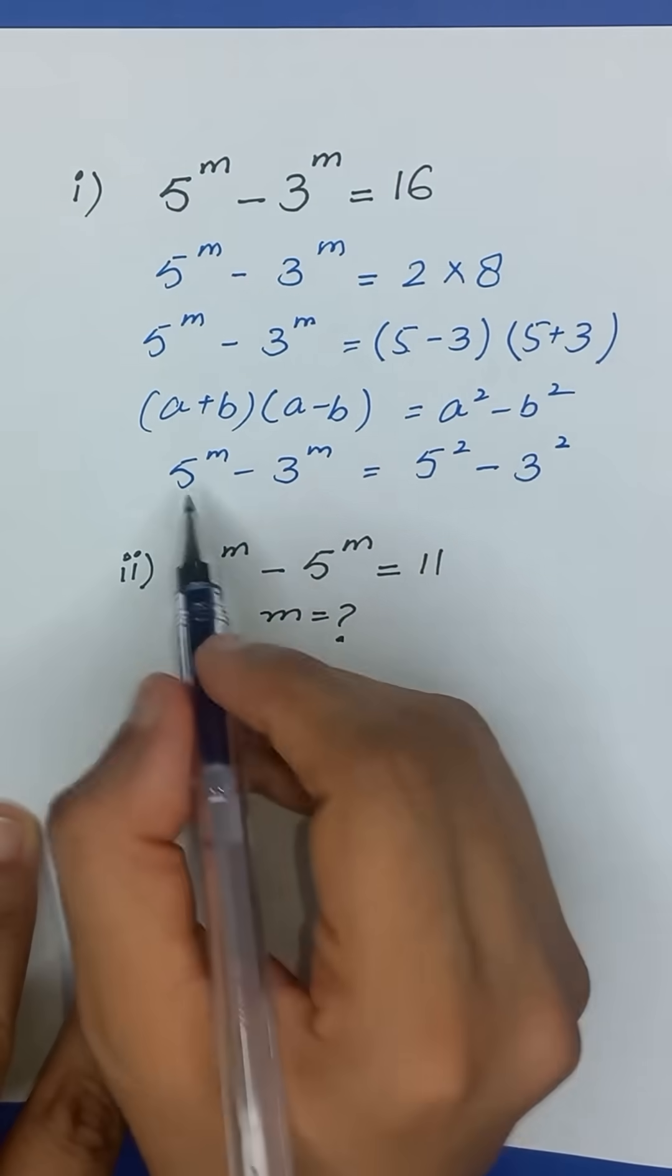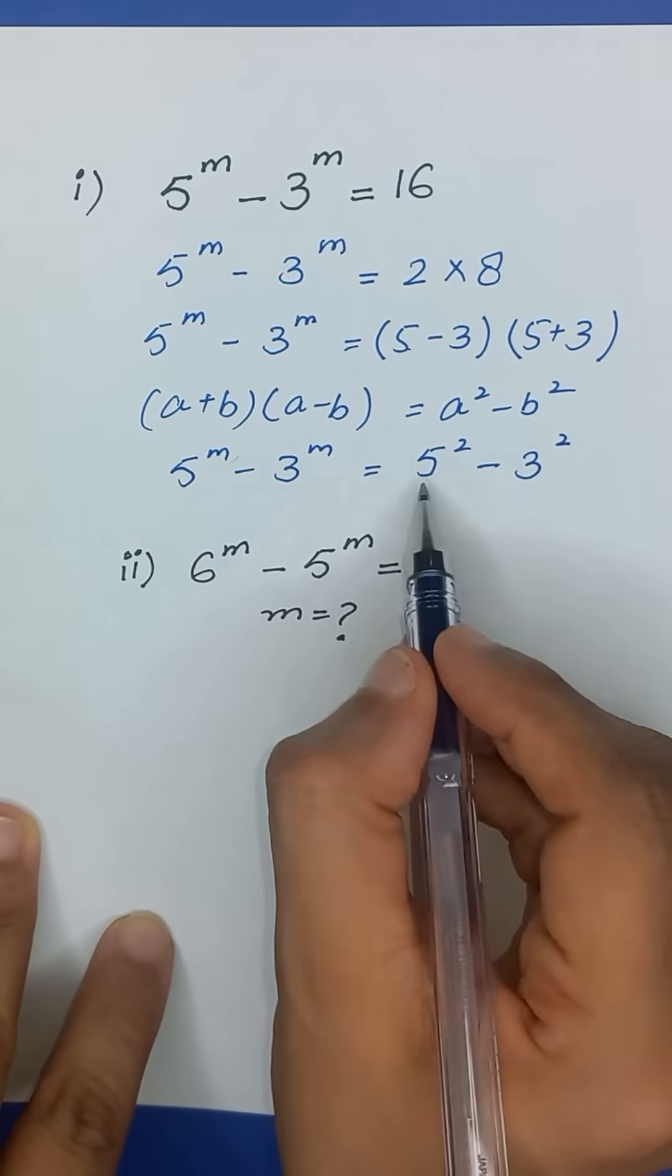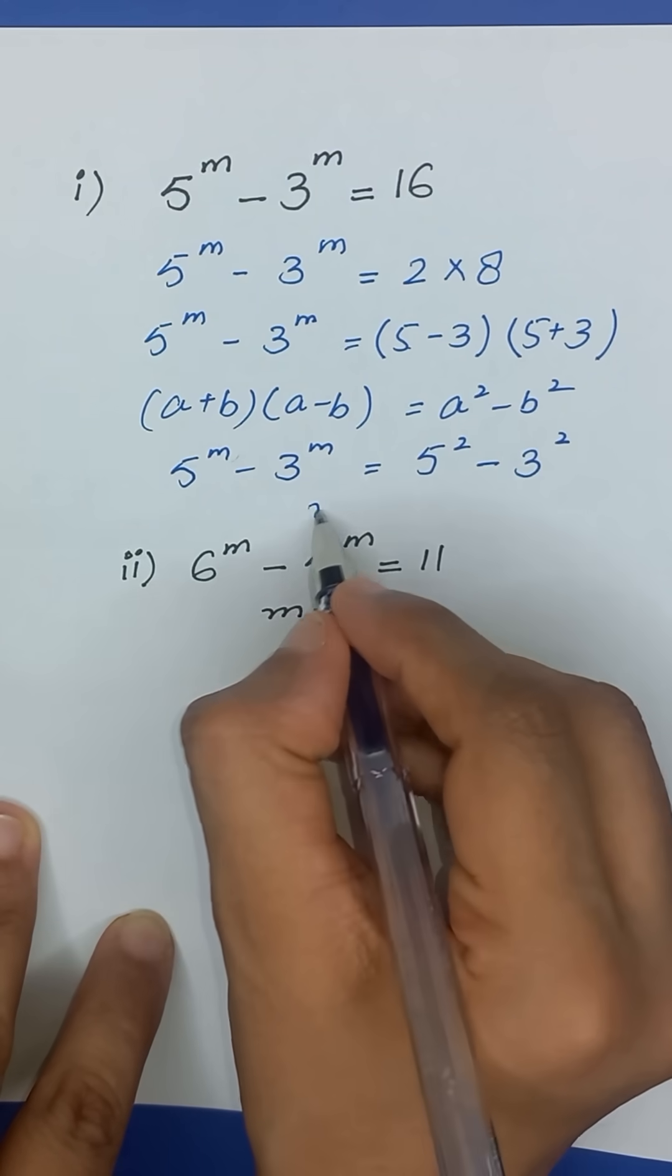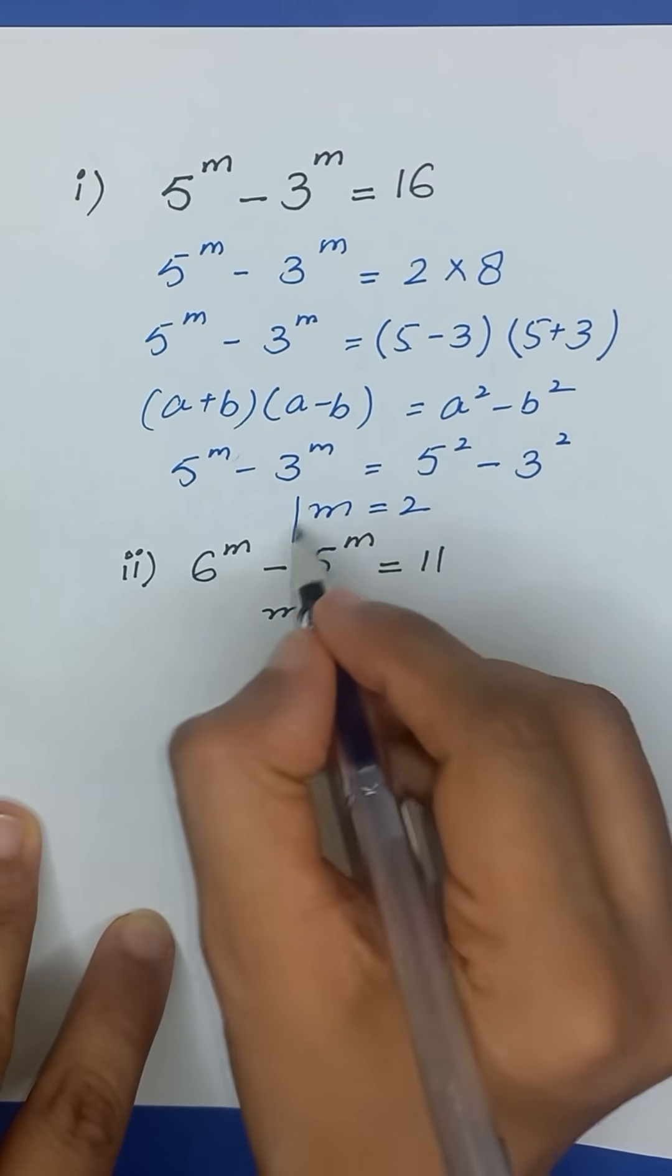Now if we equate both sides, here we have 5 to the power m and here 5 squared, 3 to the power m and 3 squared. So the value of m is equal to 2.